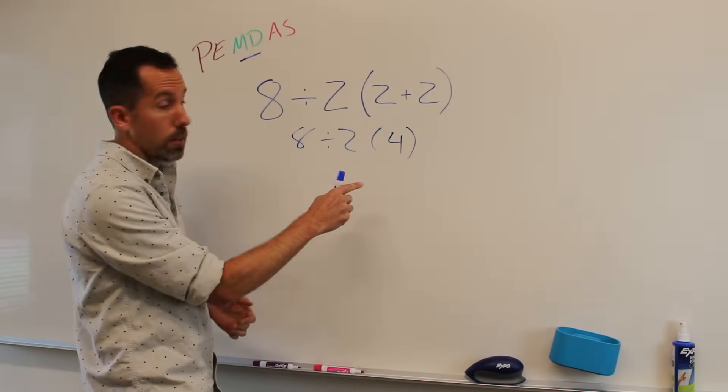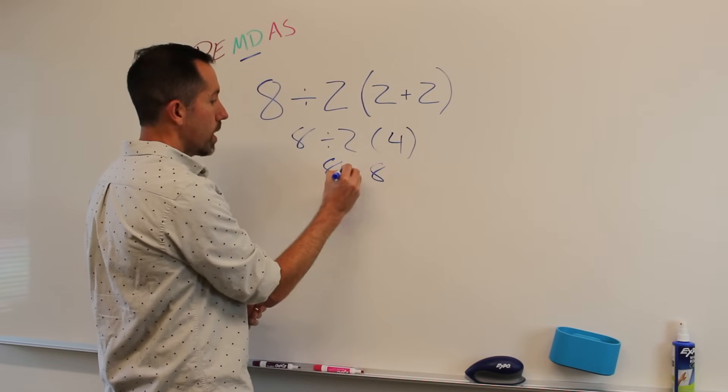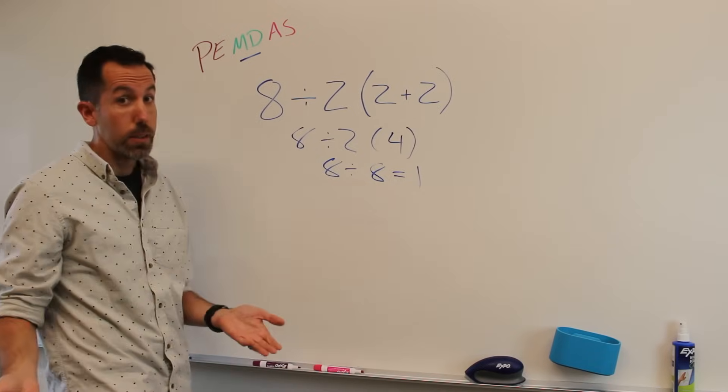If you take care of this first, you get 2 times 4, which is 8. And then you've got 8 divided by 8 and that equals 1. That's a solution.